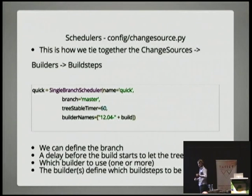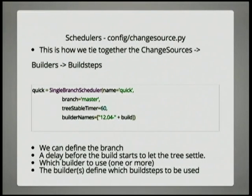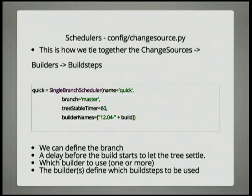A scheduler: you've got your change that's come in, you've allocated it to a builder, and you've got a set of build steps that the builder needs to run. What the scheduler does is it joins the change that comes in to the builders, and therefore the build steps. In this case, we're just building a single branch — the master. The tree stable timer is there so that if you do a single change and it triggers a build, and then you go and change one more and one more, you've got multiple commits banked up. The tree stable timer basically waits for 60 seconds until everything's settled down, and then does a build. You can also have this schedule more than one builder.